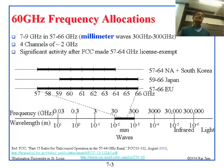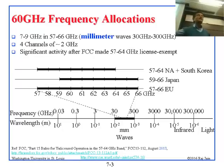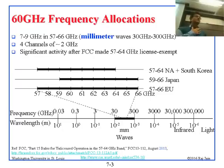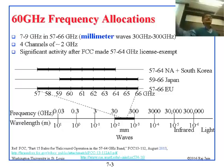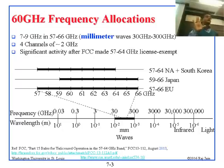Why do different countries give different allocations? Because these are all new allocations. They might have previously given these frequencies for some military things which they cannot get rid of very fast, or even for civilian things. So there's some important existing use in different countries — these are all new allocations.